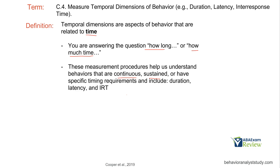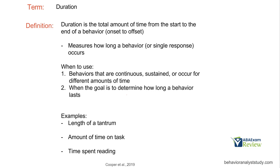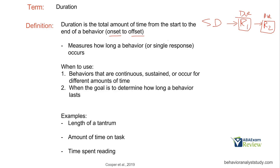We'll start with duration, which is the easiest. If we have our SD, response one, and response two, duration is just individual response length — how long is this response? It's the total amount of time from the start to the end of the behavior, sometimes referred to as onset to offset. This is how you should write your behavior definitions when teaching how to measure those behaviors — what's the onset, what's the offset — very important when using continuous measurement.